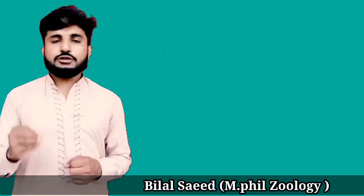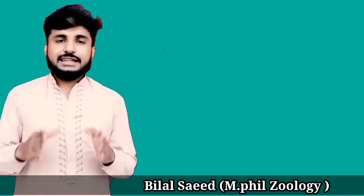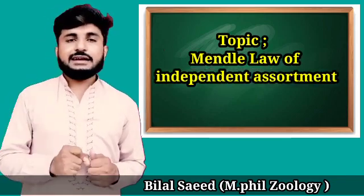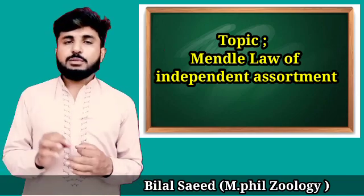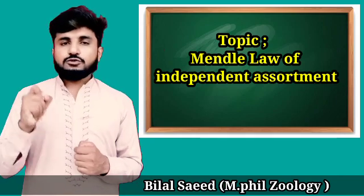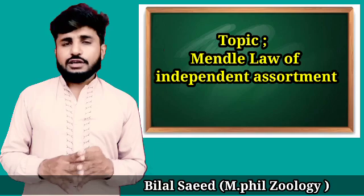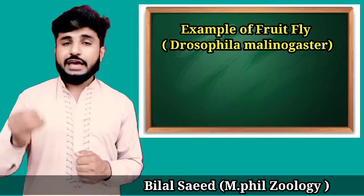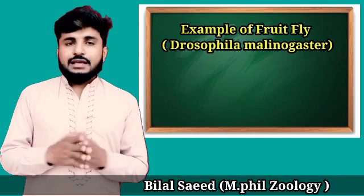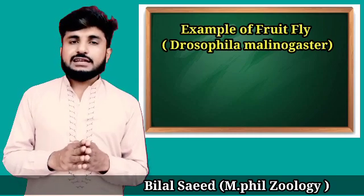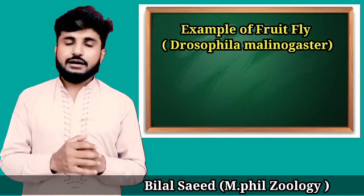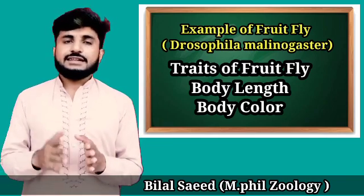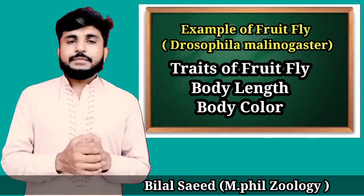Assalamu alaikum, I am Bilal. Today I am going to discuss one of the most important topics of biology - Mendel's Second Law, the Law of Independent Assortment. The main problem which students face is when we have to prove this law using the example of fruit fly. If we are zoologists and cannot use pea plants, we have to prove Mendel's Law of Independent Assortment by using fruit fly as an example. Most students find difficulty identifying the main characters to discuss in this proof.